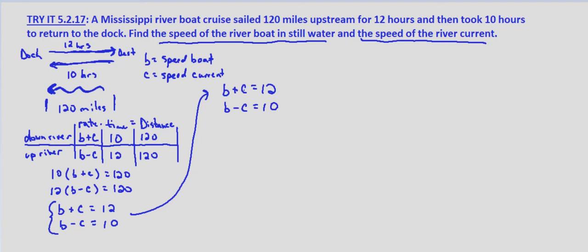If you'll notice c and minus c we can just add these together to get rid of the c variable. So b plus b is 2b. C minus c or c plus negative c, those cancel. Equals 12 plus 10 equals 22. Divide both sides by 2 and we get b equals 11 miles per hour.